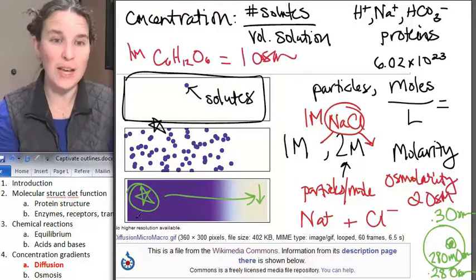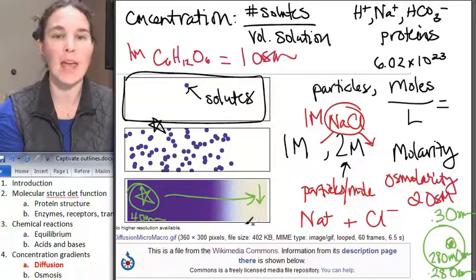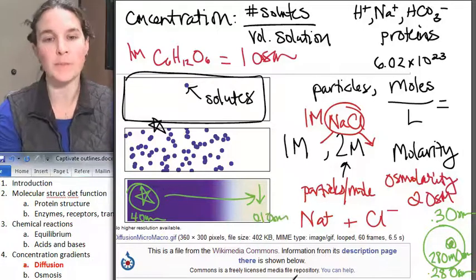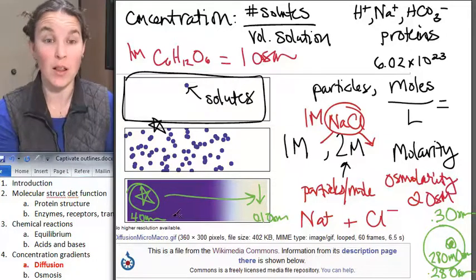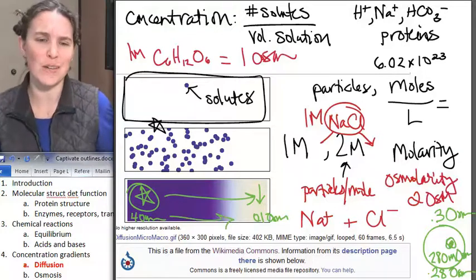I could put a number on this. I could tell you that this was like four osmoles, and this was like 0.1 osmole. And now we've got numbers that say, yeah, that's super concentrated. That's not very concentrated at all. And now you can imagine that, yeah, those molecules are going to move down the concentration gradient. Of course, they are.